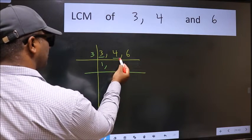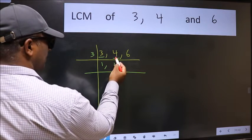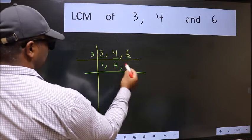The other number 4 not divisible by 3 so we write it down as it is. The other number 6, when do we get 6 in 3 table?